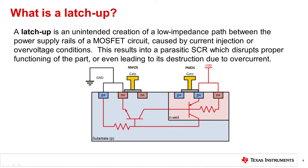also known as a silicon controlled rectifier or SCR, creates a positive feedback loop. This can lead to the destruction of the IC due to overcurrent. The only way to halt this feedback loop is to reset the power.